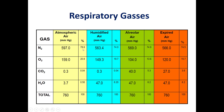As we can see, nitrogen is a major percentage at around 78%, oxygen is around 21%, CO2 is around 0.04%, and H2O vapor available in the atmosphere is around 0.5%.